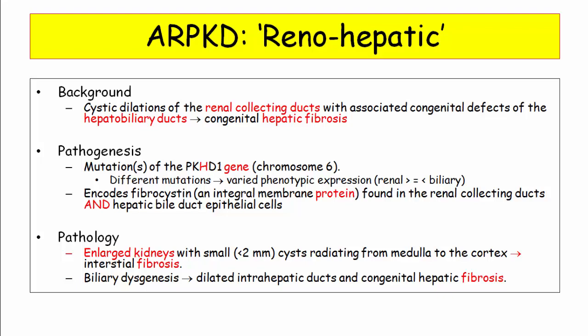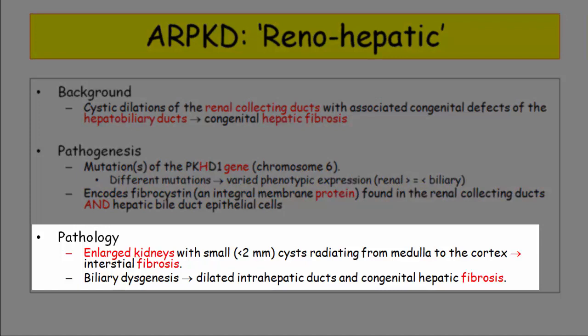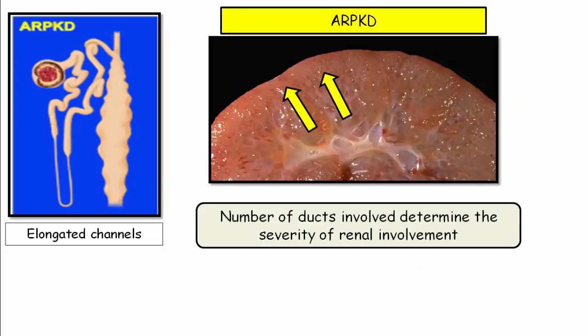Here is the summary material. For reasons of congenital hepatic fibrosis, autosomal recessive PKD can be thought of as a renal-hepatic disorder. It is characterized by cystic dilations of the collecting ducts and biliary dysgenesis. The defective gene is PKHD, leading to defective fibrocystin — a structural protein found both in the kidney and biliary ducts. The kidneys are enlarged and pathologically described as having small radiating cysts leading to interstitial fibrosis, with elongated channels running at right angles to the cortical surface. Disease severity depends on the number of collecting ducts involved, which varies phenotypically by individual mutation.